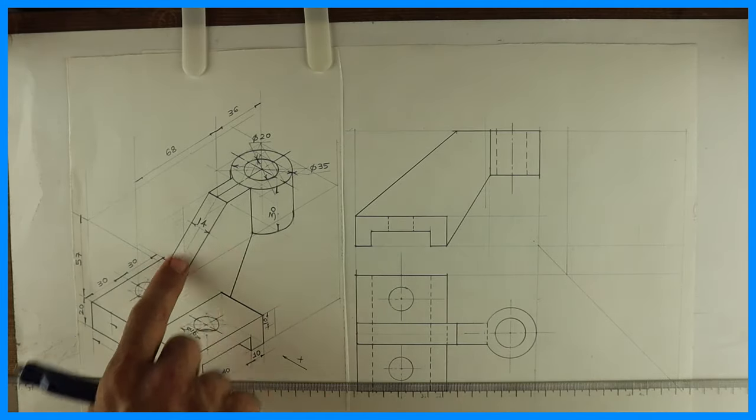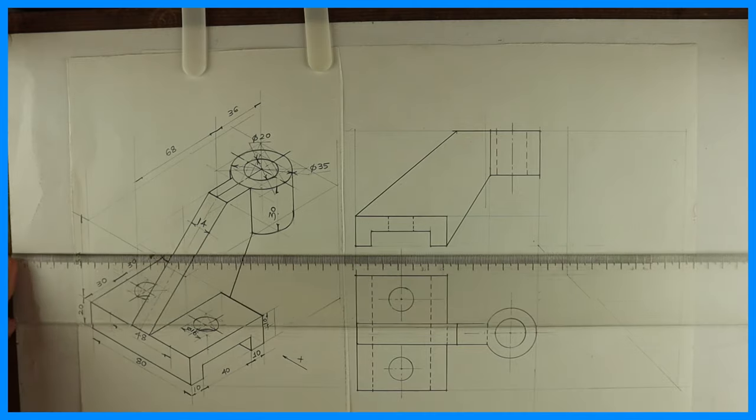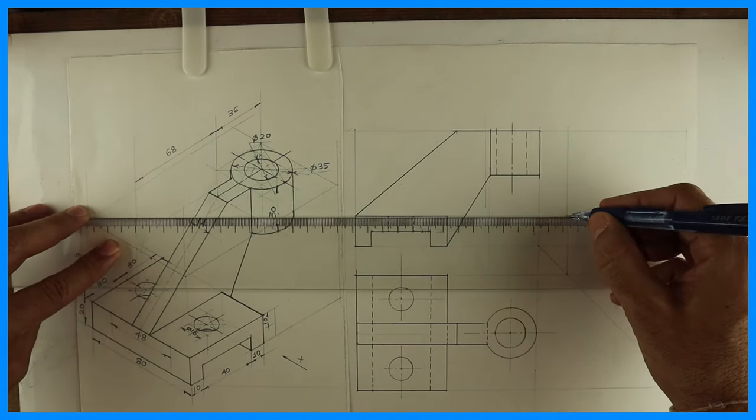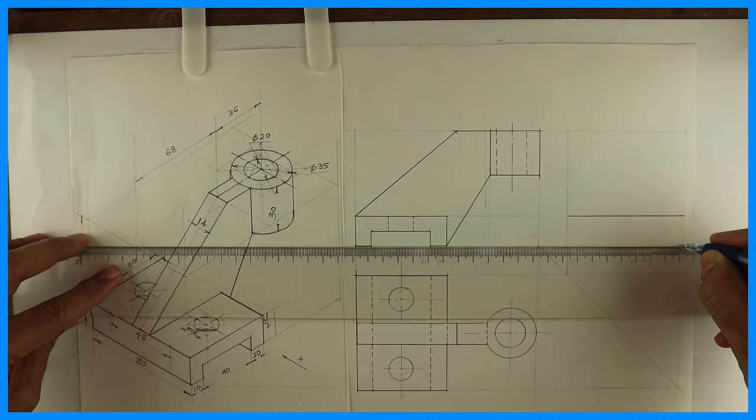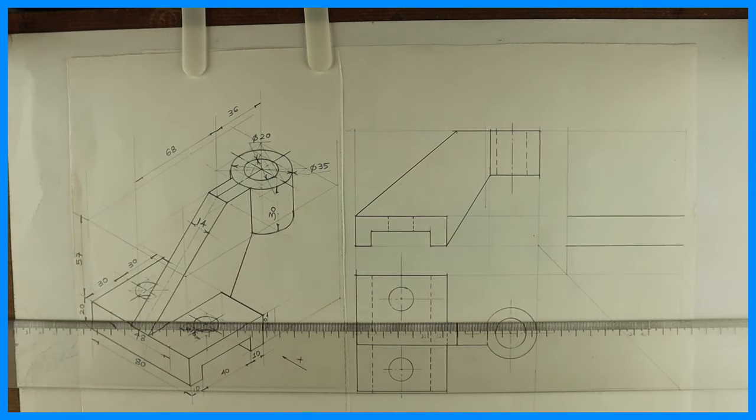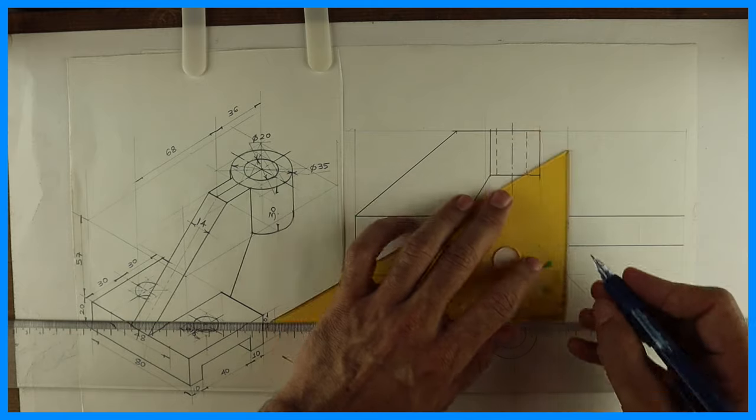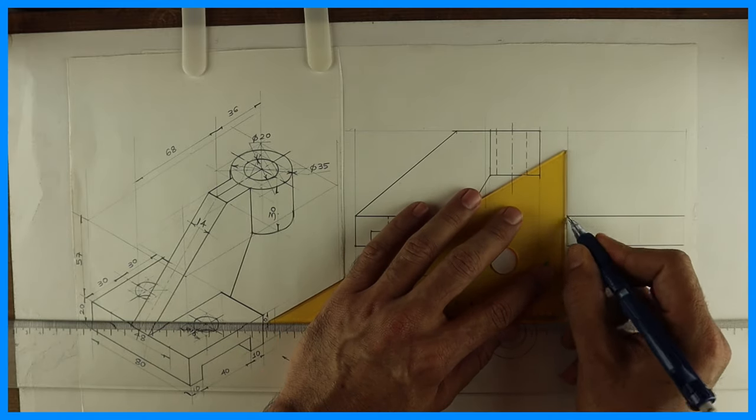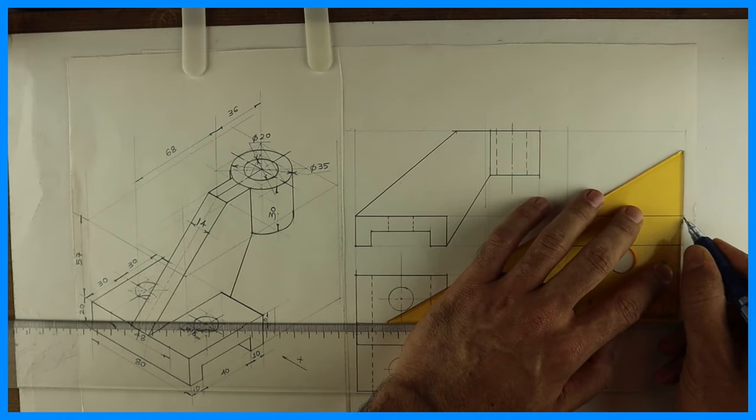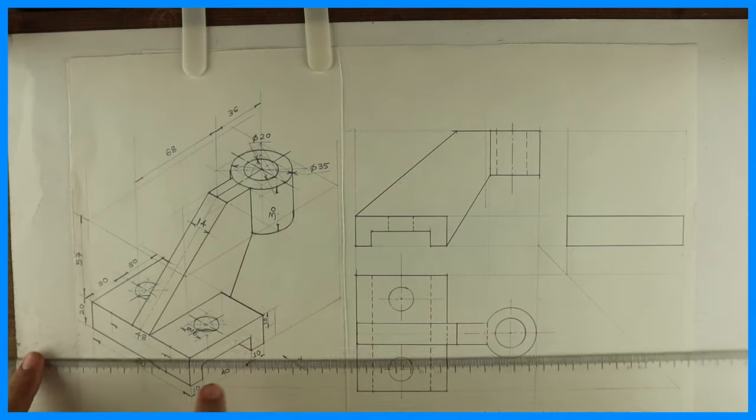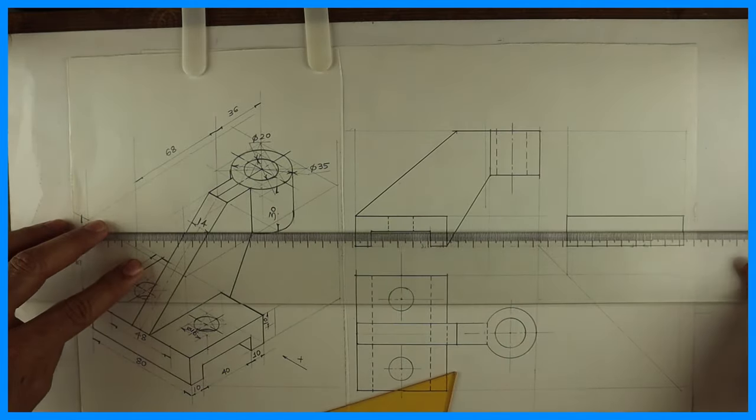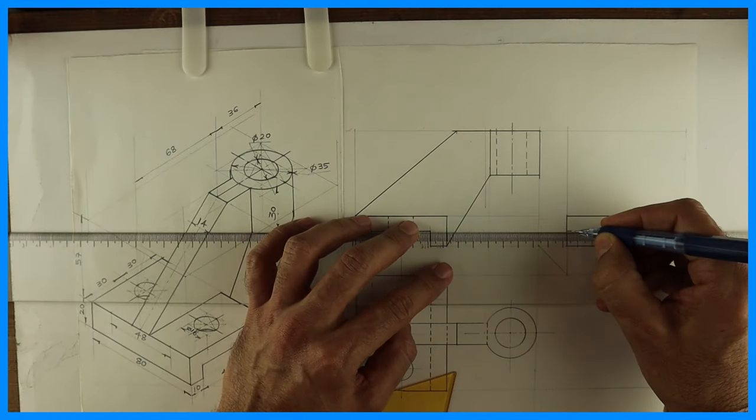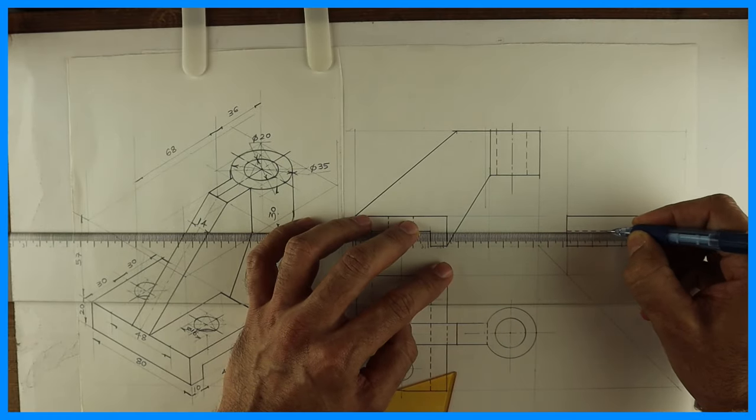Now we'll try side view. Side view where you'll see this part, rectangle. So we'll draw that rectangle first, that 20 by 80. We'll draw that first. We'll draw vertical line. See, then it is going through and through. So from here this will be through and through.